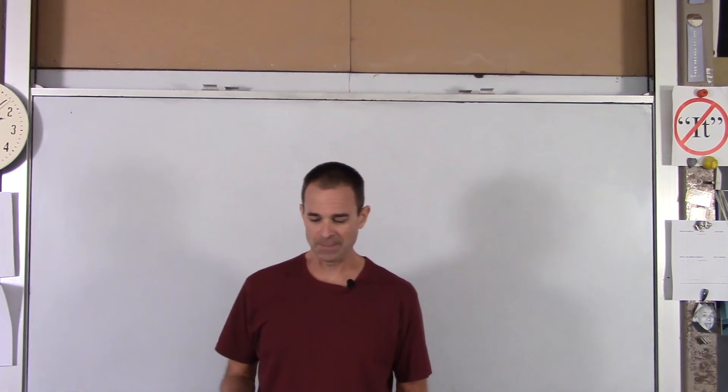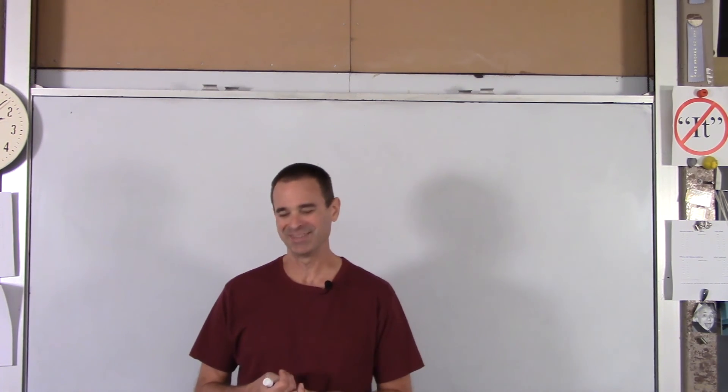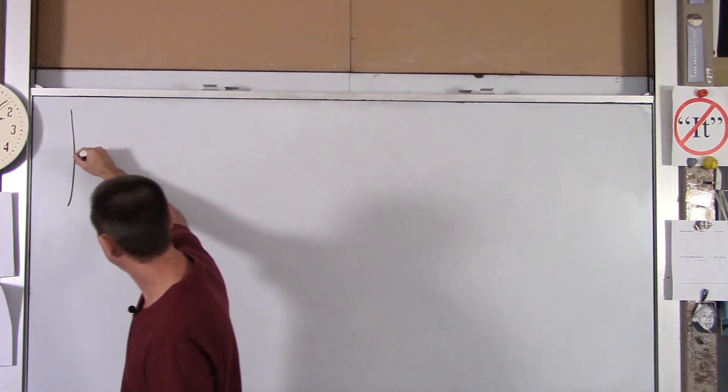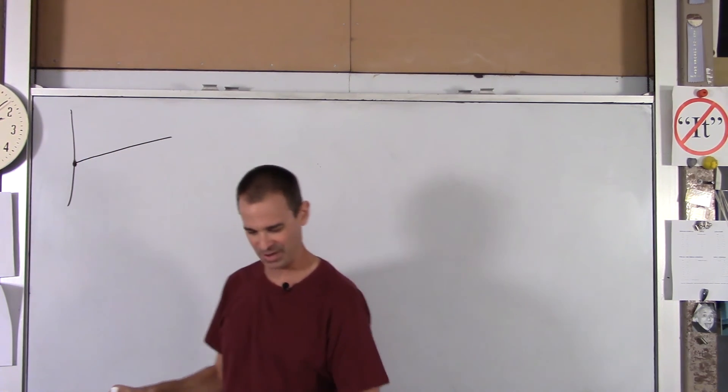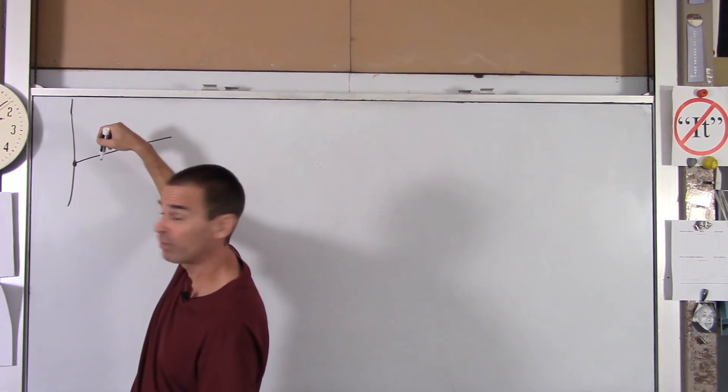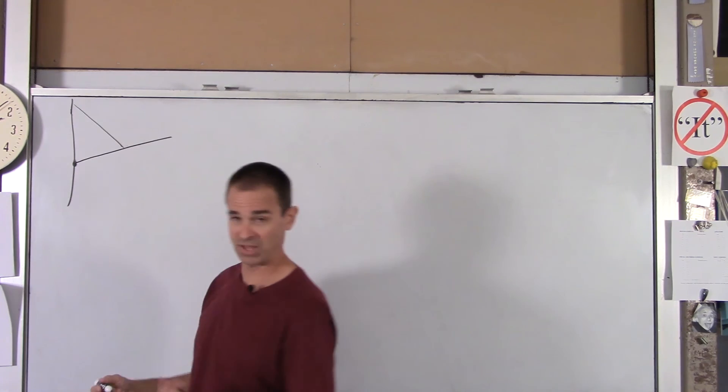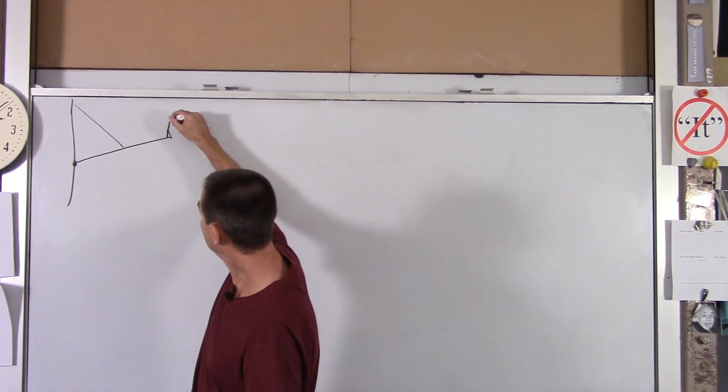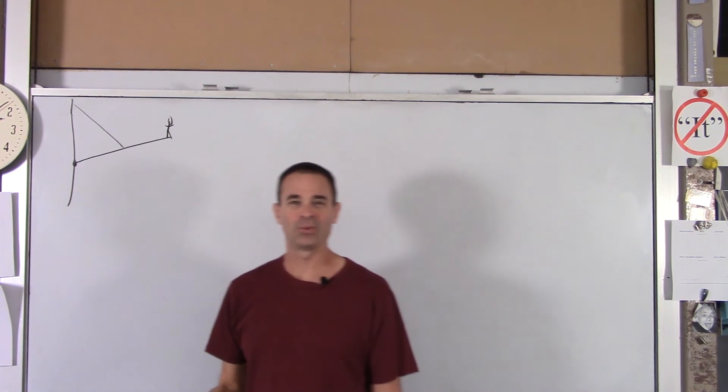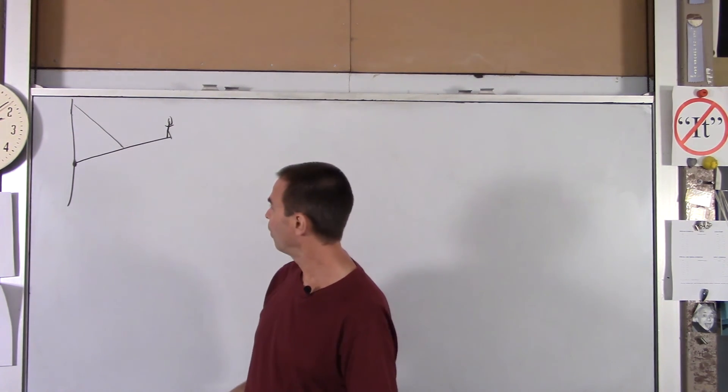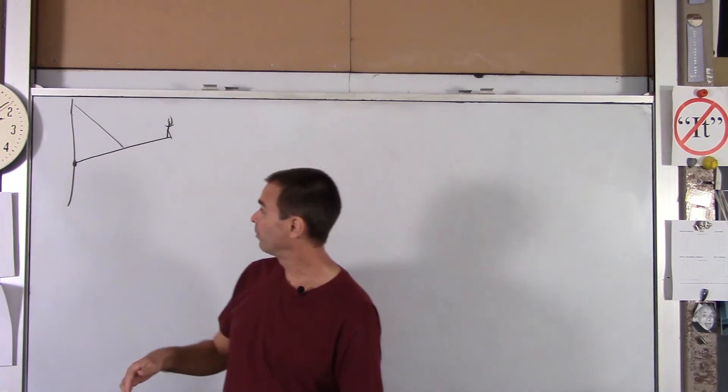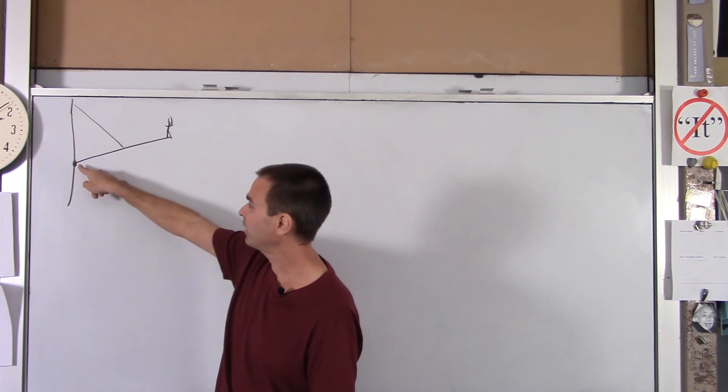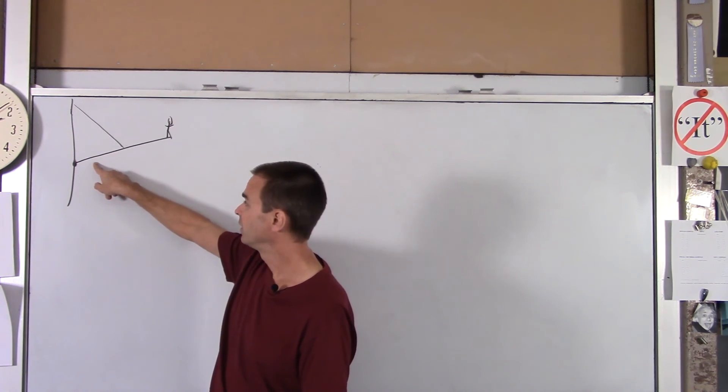So the situation is what we call the Sir Lost-a-Lot example. We have a castle wall and a drawbridge attached to the castle wall, but not down all the way. The drawbridge is attached to the castle wall with some kind of chain. Sir Lost-a-Lot walked across the drawbridge before it was down, and now he's standing at the edge and has nowhere to go, a little lost. Here's what we want to find: the tension in the drawbridge cable, and the reaction forces between the castle wall and the actual drawbridge.